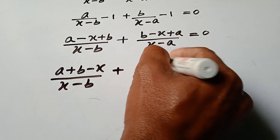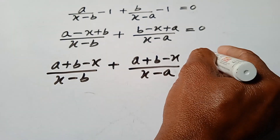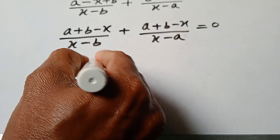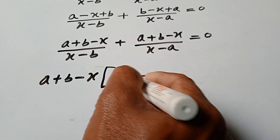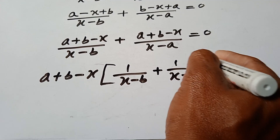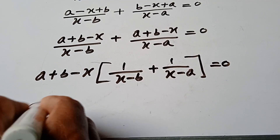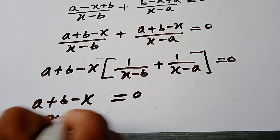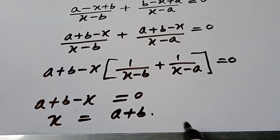So a plus b minus x over x minus b plus a plus b minus x over x minus a equals 0. Taking a plus b minus x as a common factor, either a plus b minus x equals 0, giving x equals a plus b.